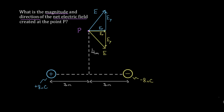So what do we do with all these components to find the net electric field? In these 2D electric problems, you focus on finding the components of the net electric field in each direction separately. We divide and conquer: what's the horizontal component and what's the vertical component of the net electric field? Once we know these, we can combine them using the Pythagorean theorem to get the magnitude of the net electric field.